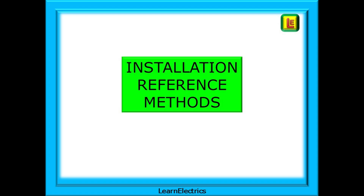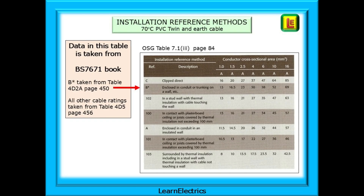What are the different installation reference methods? Page 84 of the On-Site Guide shows Table 7.1.3 for PVC twin and earth cable. It shows the reference methods down the left side and the maximum amps for different cable sizes along the top. Taking 2.5 square millimetre as an example, using reference method C - clipped direct - the cable will take up to 27 amps. But the same cable for method 103, completely surrounded by thermal insulation, the maximum is just 13.5 amps - half the previous method. This data comes from the brown BS 7671 wiring regs book.